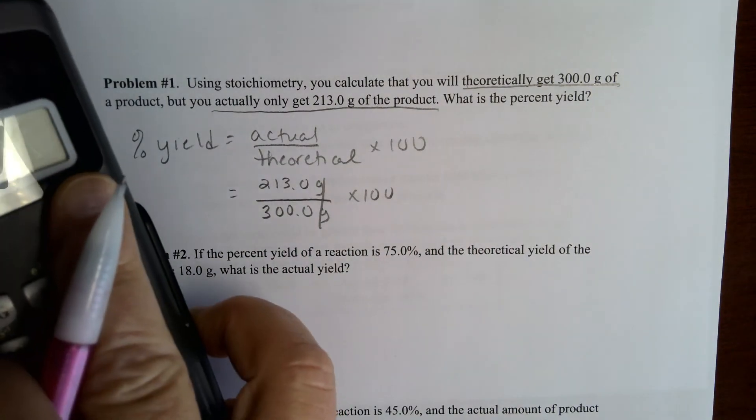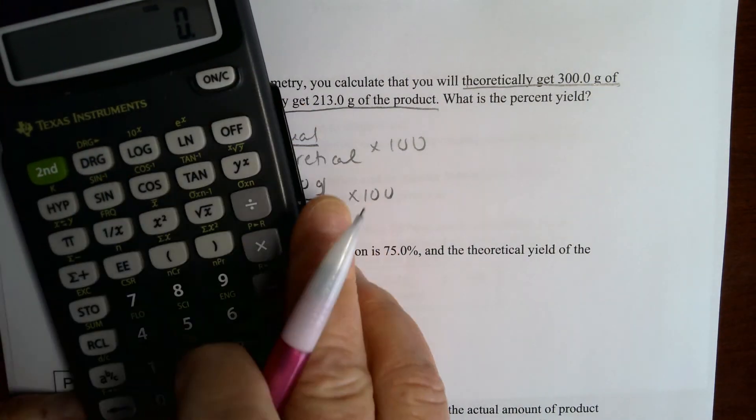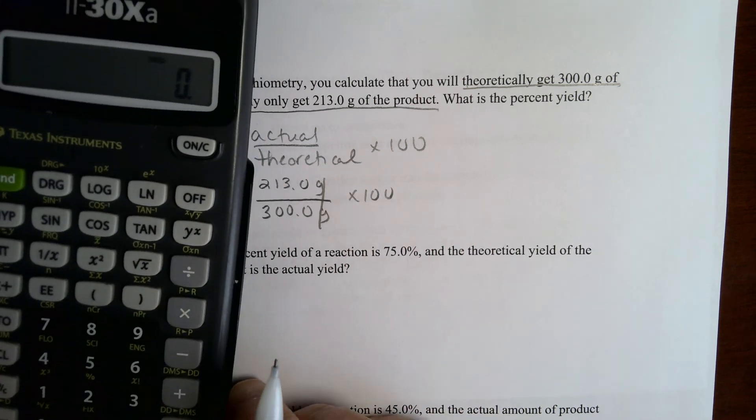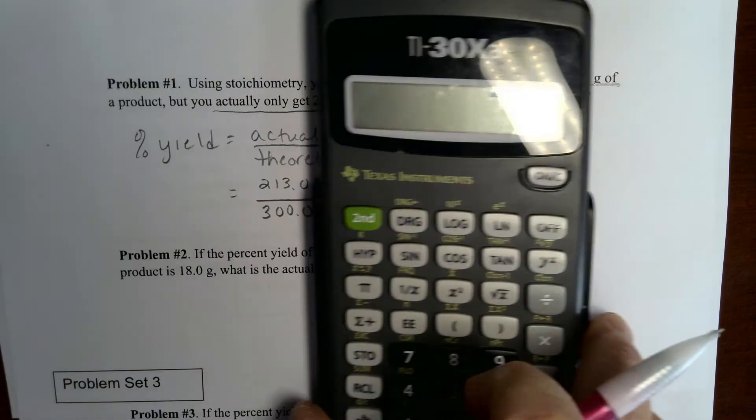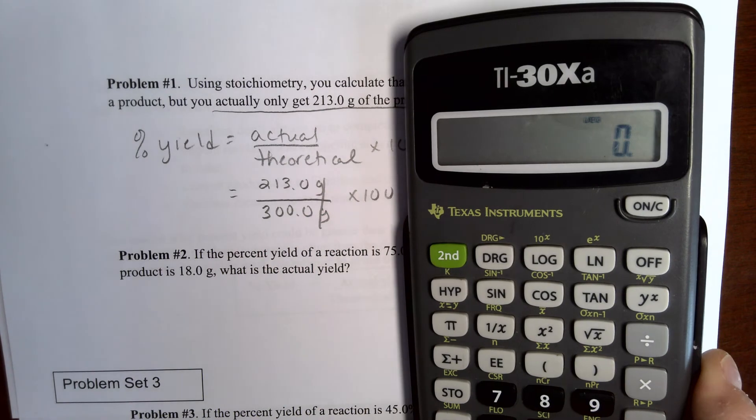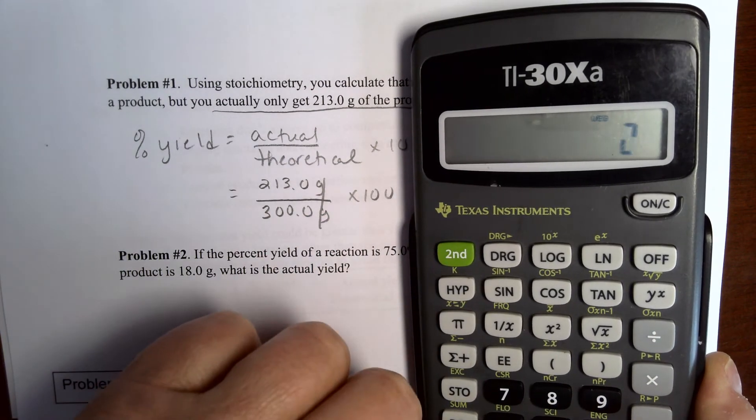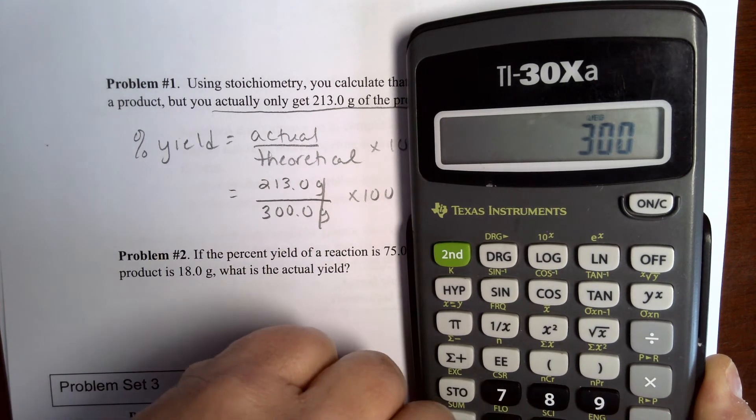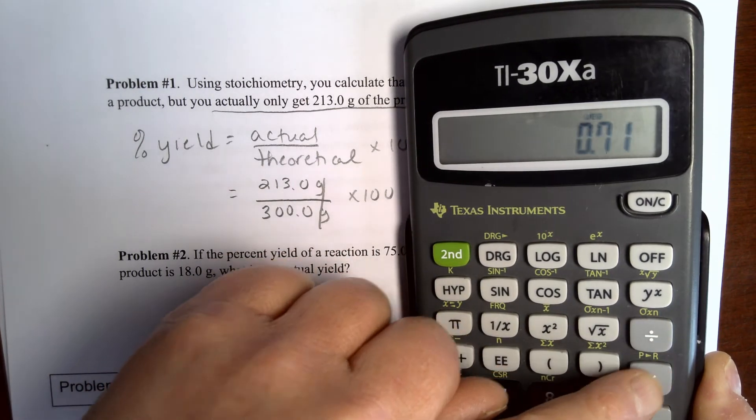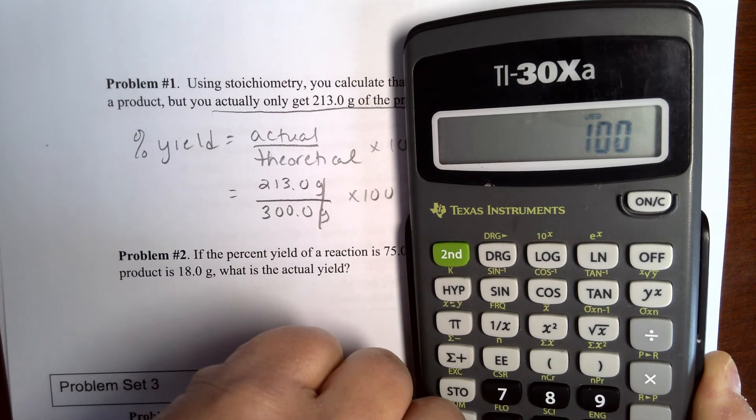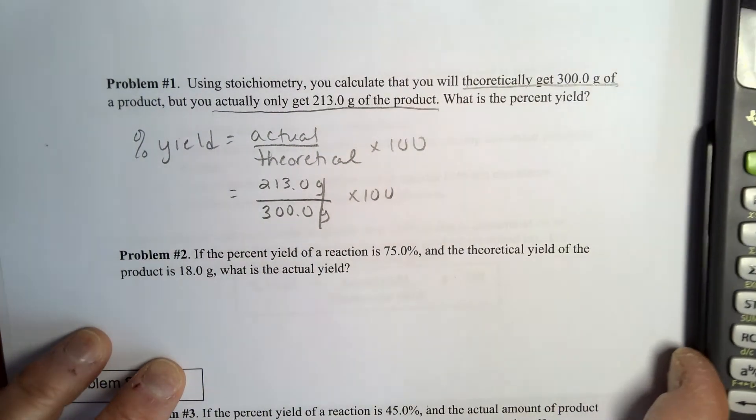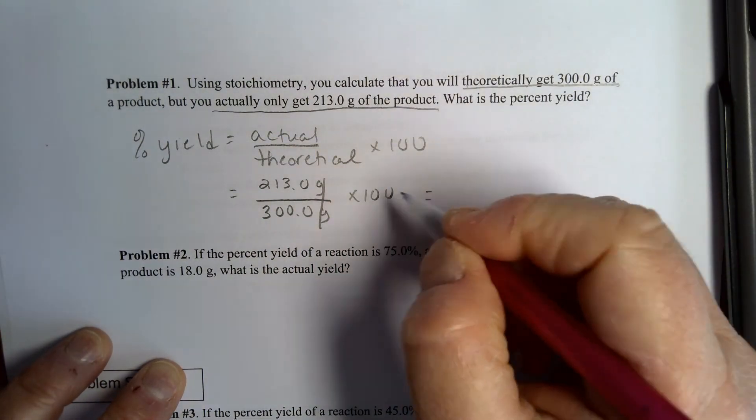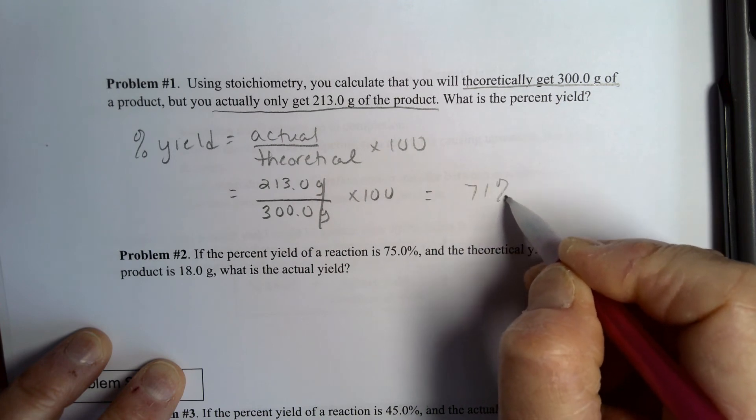And if we do this math in the calculator, we are going to see 213 divided by 300 equals this, multiply it by 100 to put it into percent form, and we get 71%. So the percent yield is 71%.